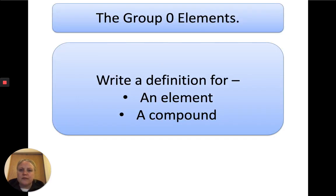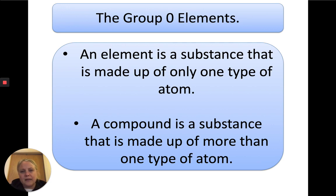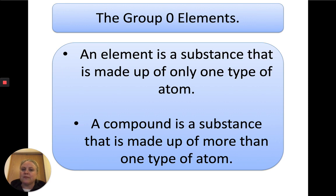So what are the group zero elements? Before we start, what does an element mean and a compound mean? Pause the video and write a definition. An element is a substance made up of only one type of atom, whereas a compound is made up of more than one type of atom that is chemically bonded — chemically joined together.